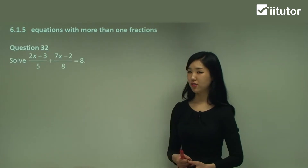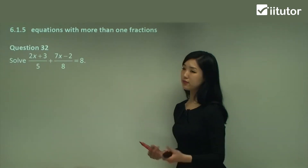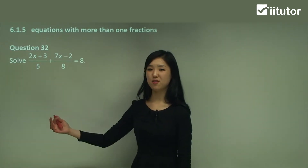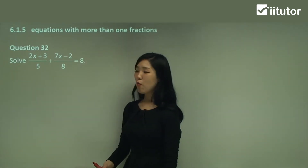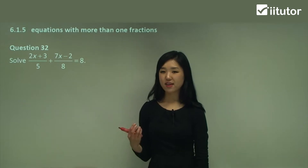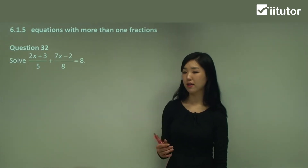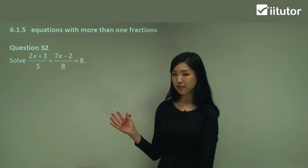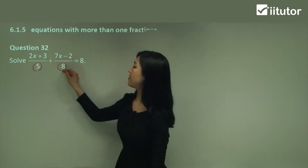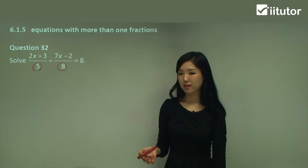So start with question 32. We've got two fractions — one fraction here, one fraction here. All I want you to do is firstly identify the denominators, as we did in the previous part. So what are the denominators? They're 5 and 8, but we have different denominators.